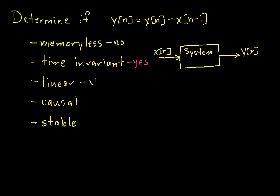For causality, we ask: does the output at time n depend on inputs at time n and earlier, or does the system have to look into the future — for example, depending on x of n plus 1? The output at time n depends on the input at time n and the previous input at time n minus 1, so this system is causal — it does not have to look into the future to compute its output.